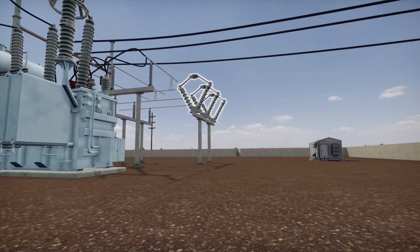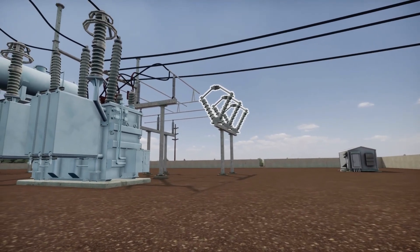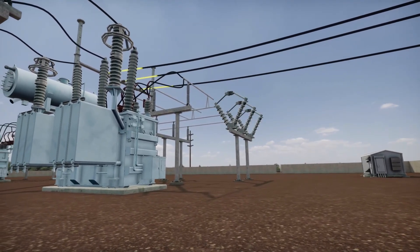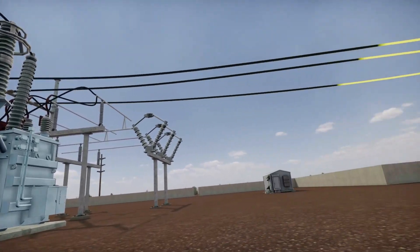This set of air disconnects allows isolation of the 115 kilovolt transformer. This line continues on to feed two smaller substations.